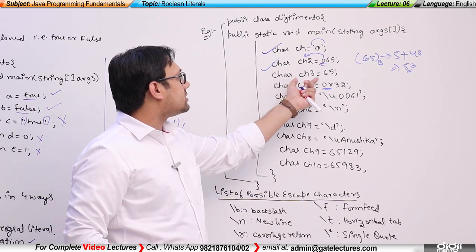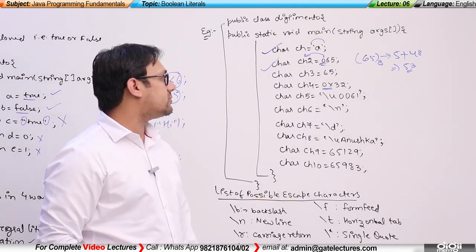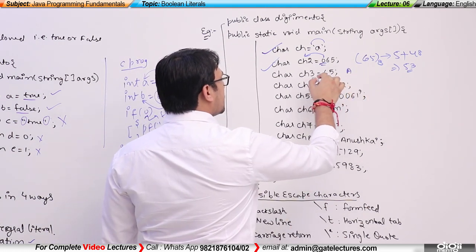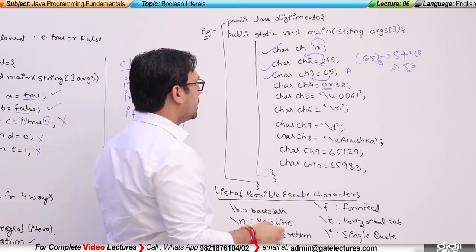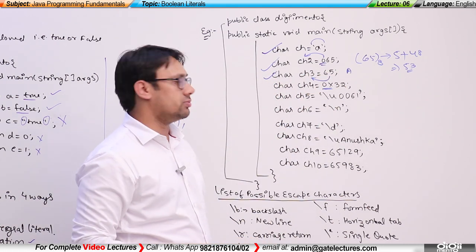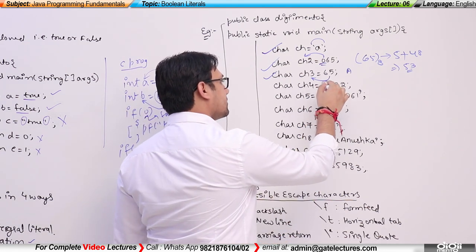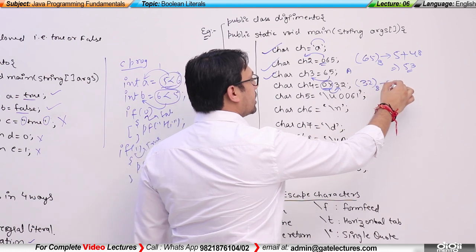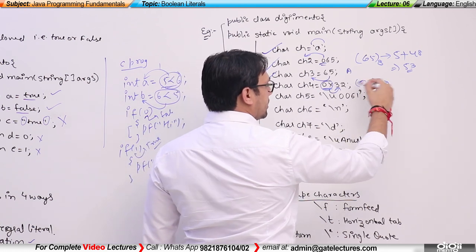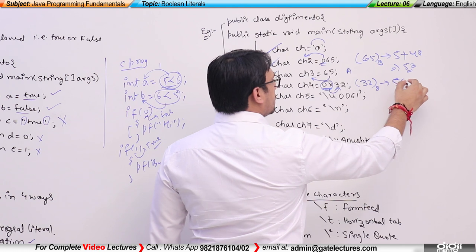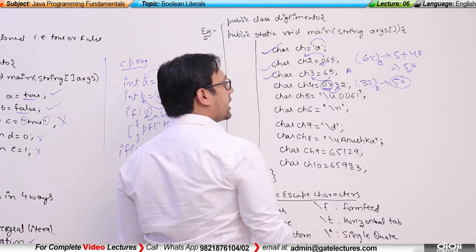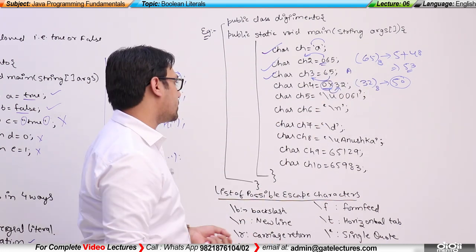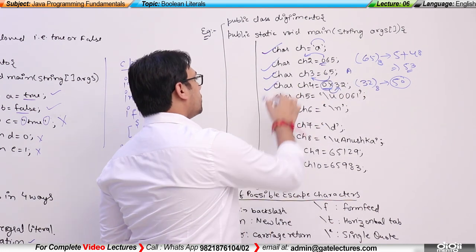If I do char ch3 is equal to 65, this 65 represents the character capital A, so capital A will be stored in ch3. If I do char ch4 is equal to 0x32, because of the 0x prefix, 32 is a hexadecimal number. Converting this hexadecimal 32 to decimal gives 50, and for this 50 we will have an equivalent Unicode representation that will be printed.